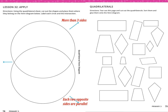The intersection is the space for shapes that follow both attributes — more than three sides AND opposite sides parallel. So we place in the intersection area the shapes that are common to both circles.